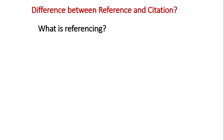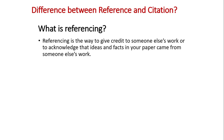So first let's discuss what is referencing. Referencing is the way to give credit to someone else's work, or to acknowledge that the ideas in fact in your paper came from someone else's work. It is actually a detail about the things that you cited, which means the author name, the work he or she published, journal name, and year. So this is referencing.